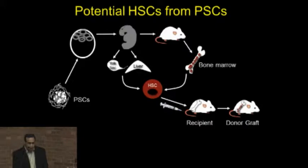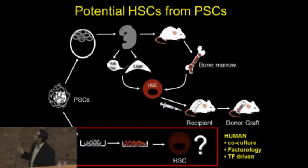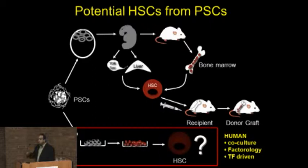Obviously in the human that's not possible — one cannot build chimeras and then isolate hematopoietic cells. That's a limitation, but the mouse biology certainly says the potential is there. So how do you mimic this in vitro? There's been an incredible amount of work done co-culturing cells on stroma and using different growth factors and different combinations — what I call factorology — to try to encourage hematopoietic stem cell growth, and in some cases transcription factor-driven approaches.